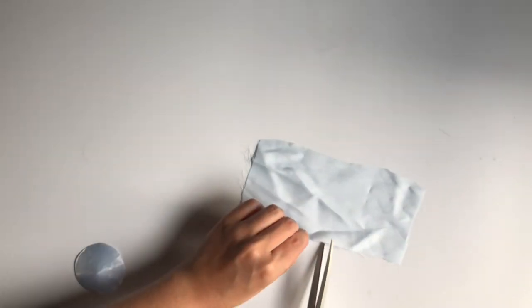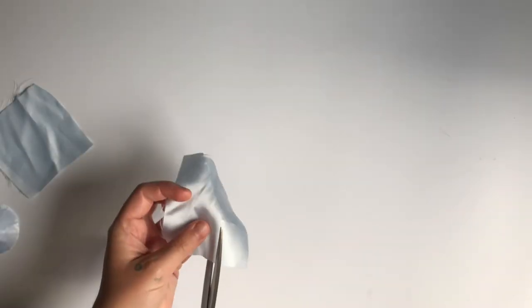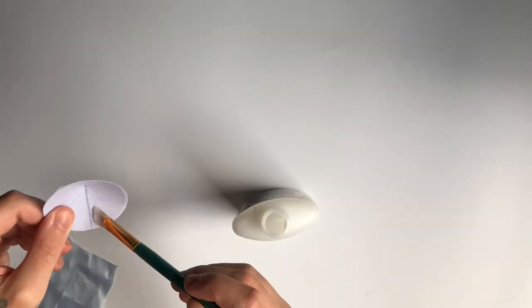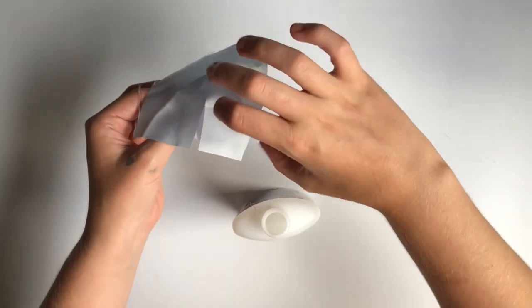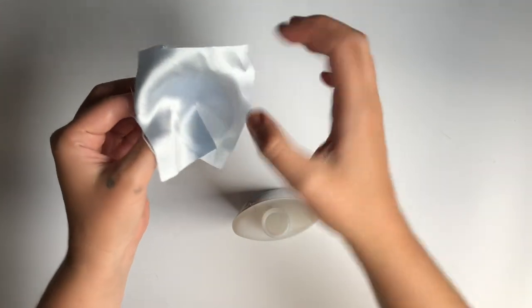And we're going to follow that same process with the inside. Cutting out two squares with a slit and lining up that slit with the slit of the inside of the base before we apply the fabric to the rest of it.